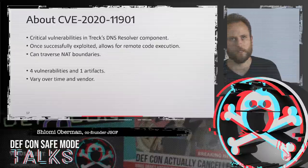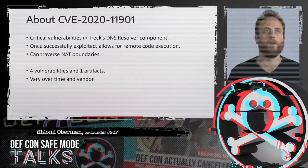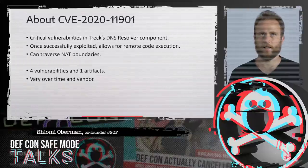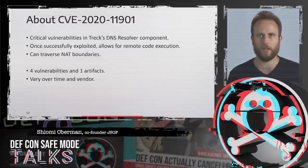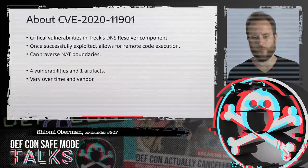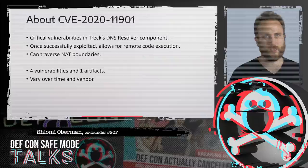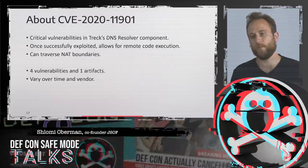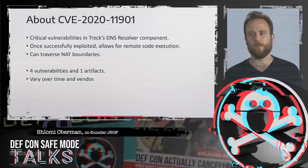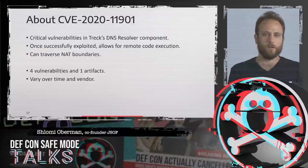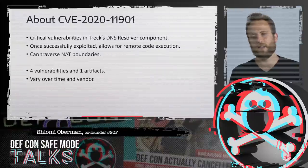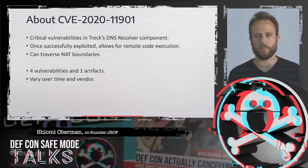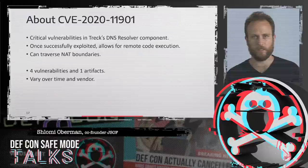A little bit about the vulnerability we'll be talking about today. CVE-2020-11901 is a critical vulnerability in the Trek DNS resolver component — a client-side DNS vulnerability. Once successfully exploited, it allows remote code execution. The reason we think it's so interesting, besides being remote code execution, is the fact that DNS traverses NAT boundaries. So a device within your network will issue a DNS request which will potentially travel over the internet, allowing sophisticated attackers to perform an attack from outside the network into the network itself.